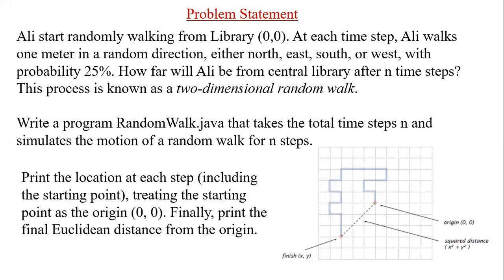How far will Ali be from the central library after n time steps? This process is known as a two-dimensional random walk. We have to write a program RandomWalk.java that takes a total number of time steps n, simulates the random walk, prints the location at each step starting from the origin (0, 0), and finally prints the Euclidean distance from the origin.